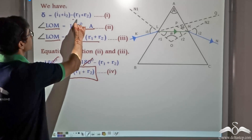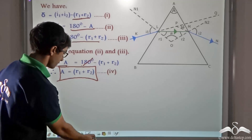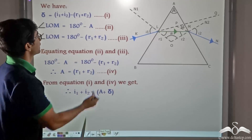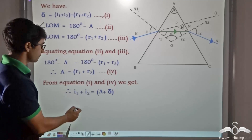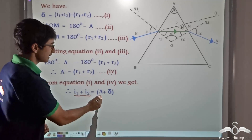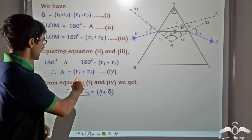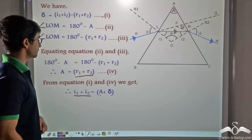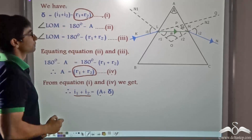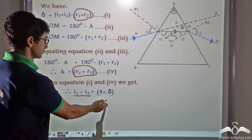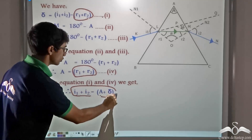We observe that R1 + R2 appears in equation 1 as well. Comparing equations 1 and 4, and substituting R1 + R2 = A, we obtain: I1 + I2 = A + delta. This is the key relationship relating the angles of incidence, the prism angle, and the angle of deviation.